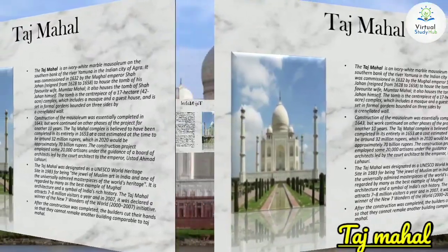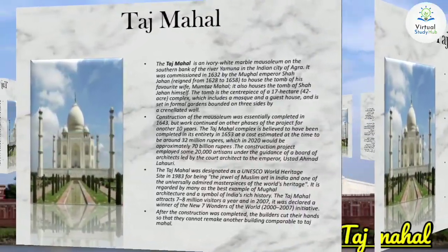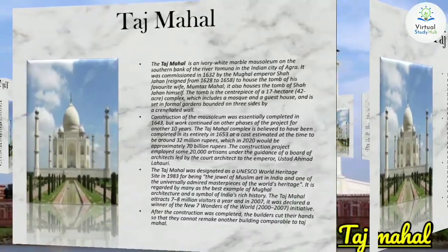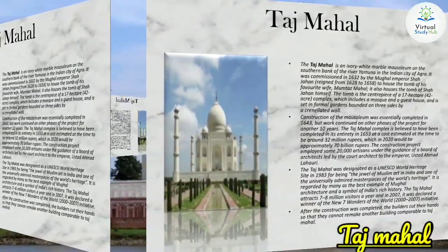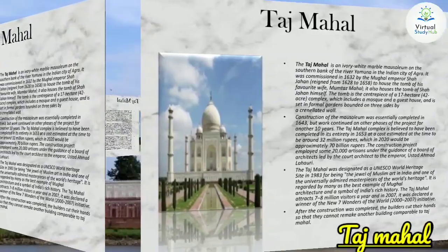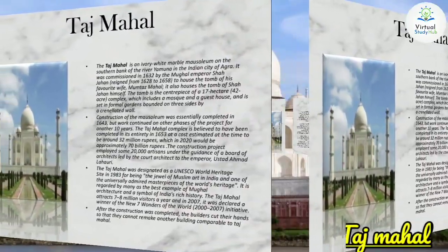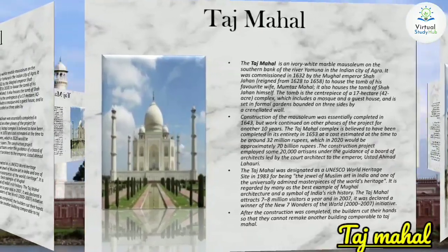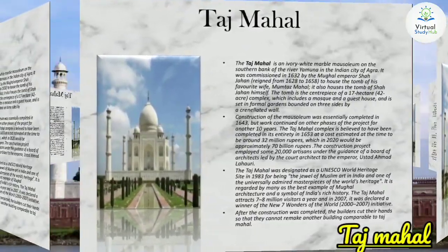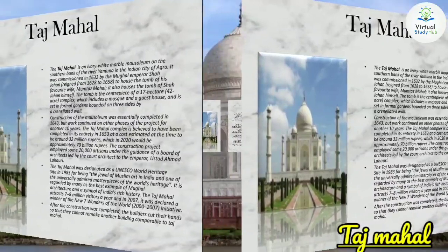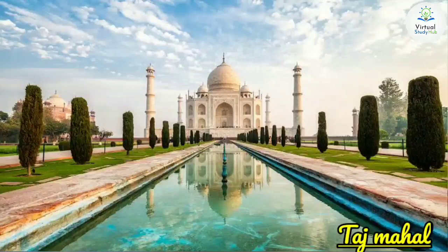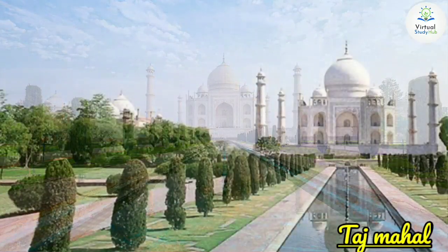Construction of the mausoleum was essentially completed in 1643, but work continued on other phases of the project for another 10 years. The Taj Mahal complex is believed to have been completed entirely in 1653 at an estimated cost of 32 million rupees, which in 2020 would be approximately 70 billion rupees — a very expensive project. Construction employed some 20,000 artisans under the guidance of a board of architects, led by the court architect to the emperor, Ustad Ahmed Lauri.